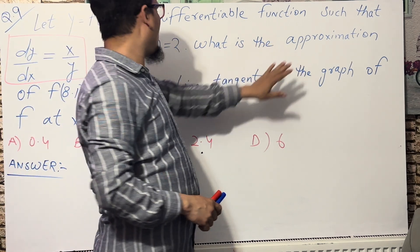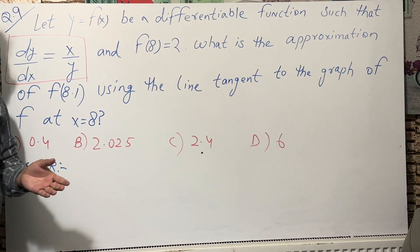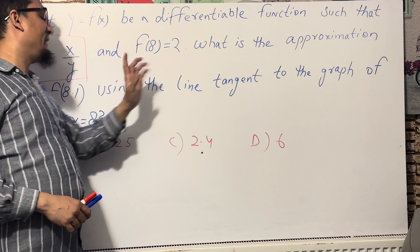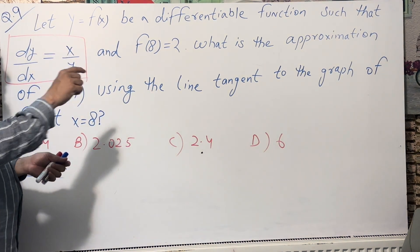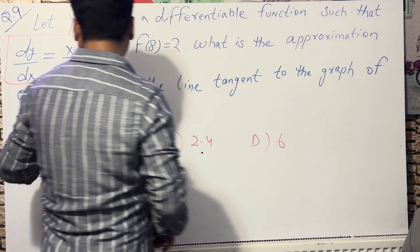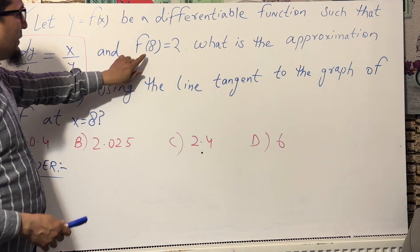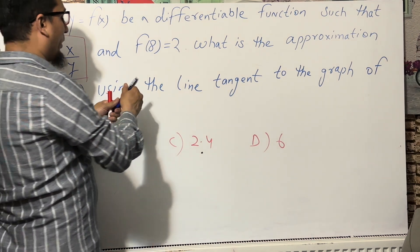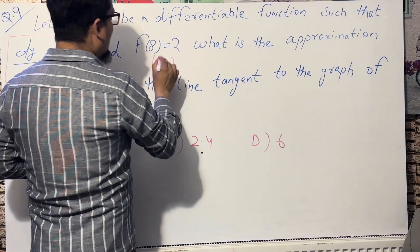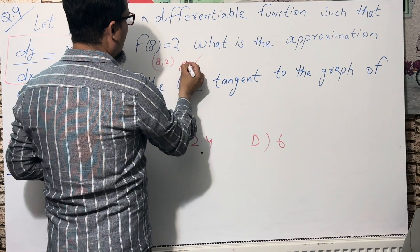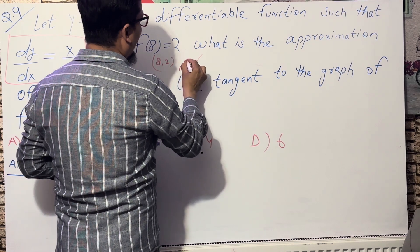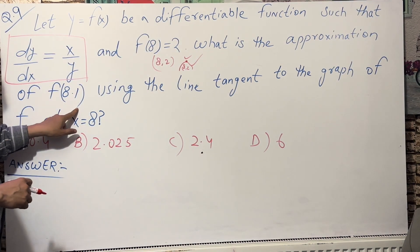The question asks: what is the approximation of f(8.1)? It's a straightforward question — if we know the function, we substitute x = 8.1 to find the approximation. We use the line tangent to the graph of f at the point (8, 2), and from that we find the value of f(8.1).